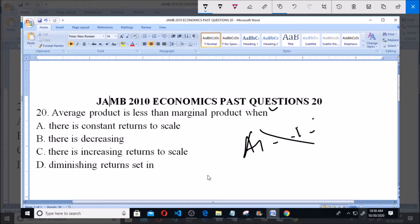When option A says there is constant return to scale, B says there is decreasing, C says when there is increasing return to scale, and D says when there is diminishing return set in.